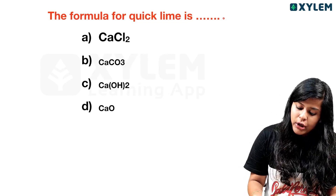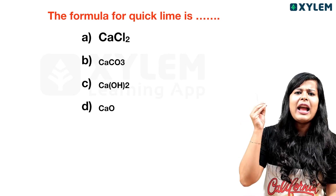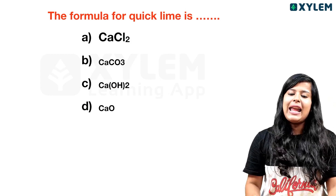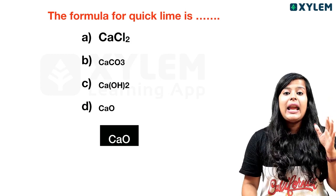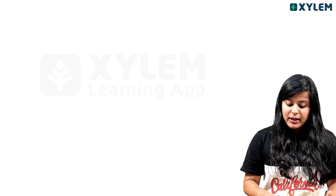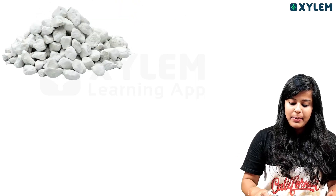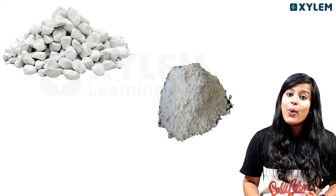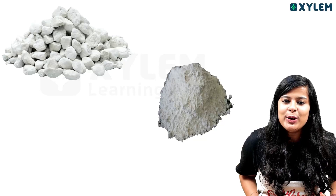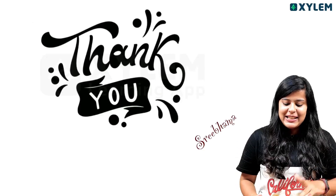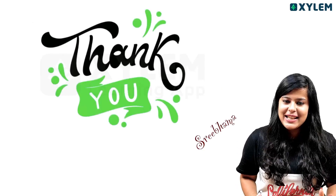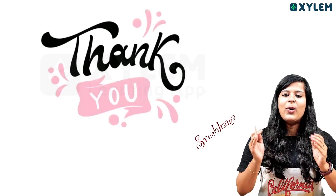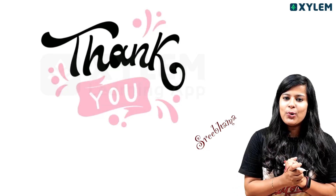The formula for quicklime — what is it? Options: CaCl2, CaCO3, CaO (twice), or CaO. The correct answer is CaO. Quicklime is CaO.